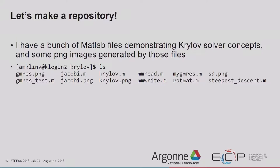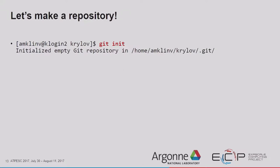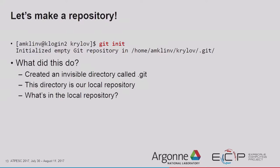Let's make a repository. I'll use files from my Krylov solver tutorial: MATLAB scripts like gmres_test, jacobi.m, krylov.m that demonstrate concepts like how the restart value for GMRES affects convergence and how diagonal dominance of a matrix impacts Jacobi convergence. I also have PNG images generated by them. To initialize our Git repository, we type `git init`. That creates an invisible directory called `.git` in our current directory — you won't see it with `ls`, but you will with `ls -a`. That directory contains our local repository. Don't ever directly modify your `.git` directory; you'll modify it indirectly through Git commands.